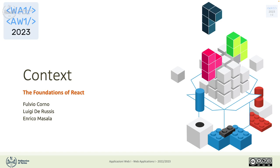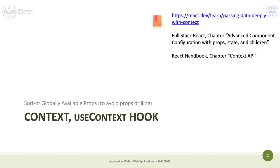We are going to spend a little time on context just to see how it works and when it can be useful. We have experienced that when we need to pass information from one point of the application to another, we do it through props. This results in having to pass props ten times or more if we have ten children within a component.